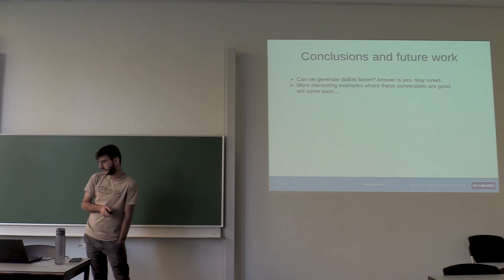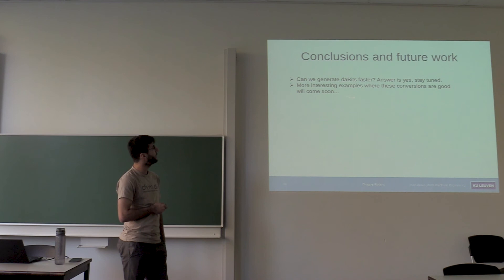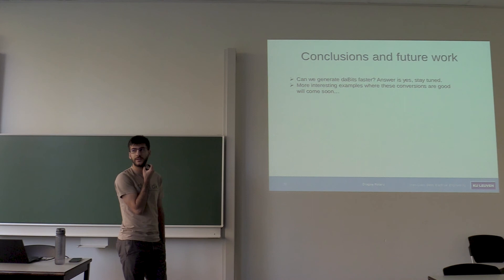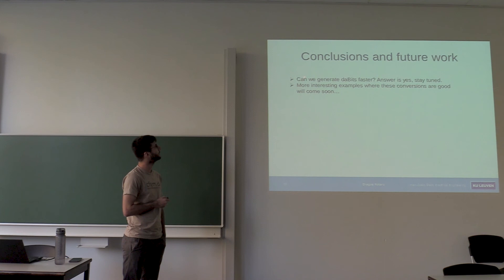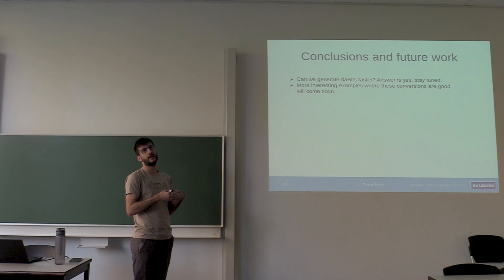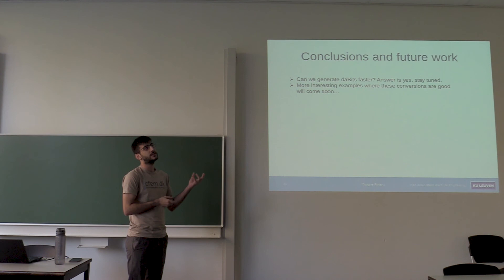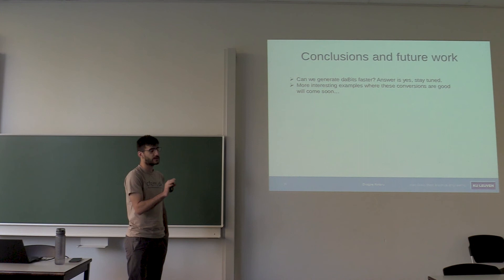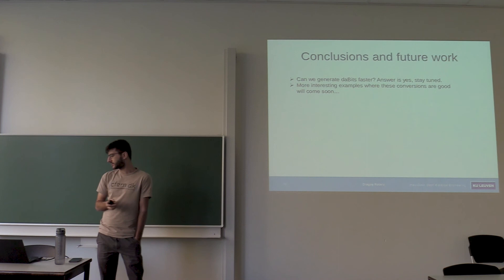For conclusions and future work: can we generate the DABit faster? The answer is yes, and maybe in three days we'll have a new preprint. We managed to get rid of the AND part and the XOR over F_2. Remember that to extend to multiple parties we needed much more bits and XORs in SCALE, which are costly. We got rid of those, so it's now just the same cost as generating one random bit with some additional amortized checks. Of course, more interesting examples where we actually use these conversions will come soon. Thank you.